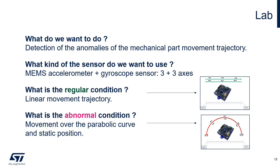In total, we will use 3 plus 3 axes, so a 6-axes sensor. Because we are going to build an anomaly detection algorithm, we need to provide regular condition signal examples and abnormal behaviour signal examples.